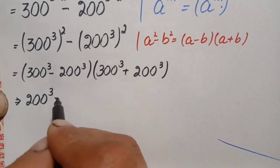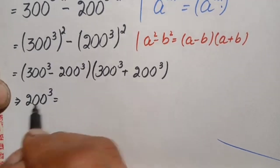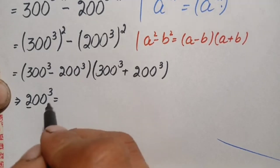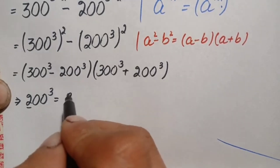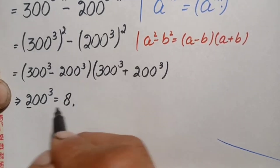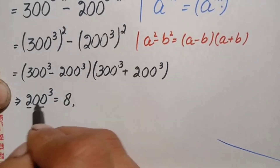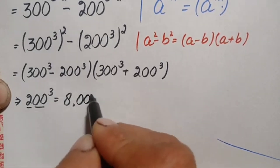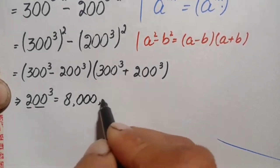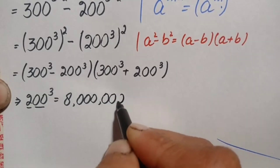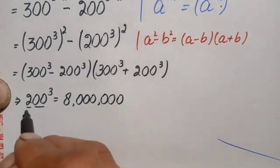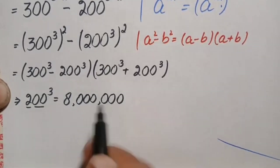First, we find 200³. The value of 2³ is 2 × 2 = 4, and 4 × 2 = 8. Since 200 has two zeros, we write those two zeros three times, giving six zeros. So 200³ = 8,000,000, which is 8 million.